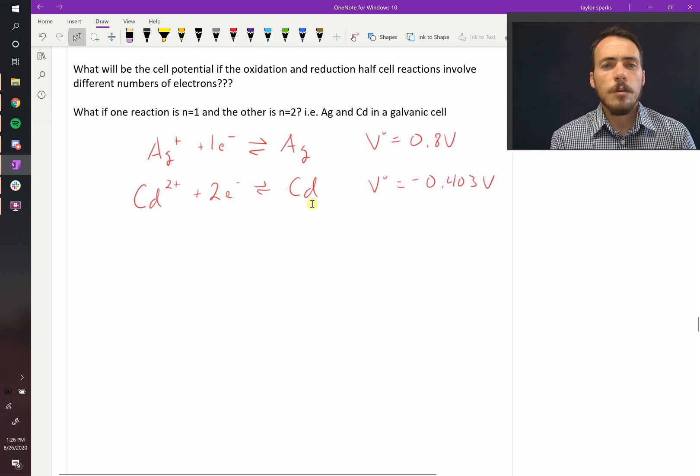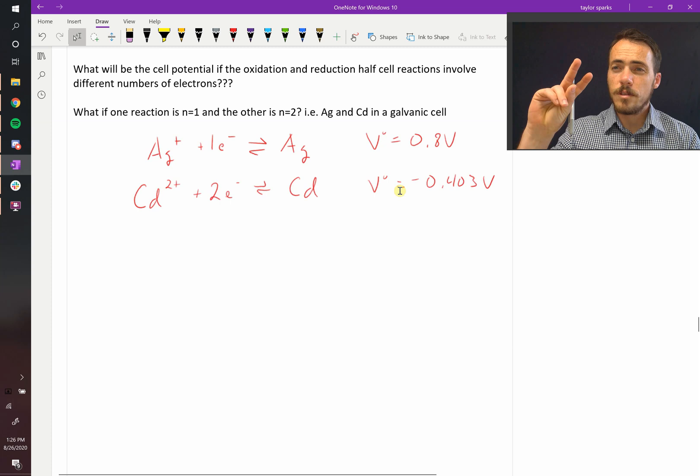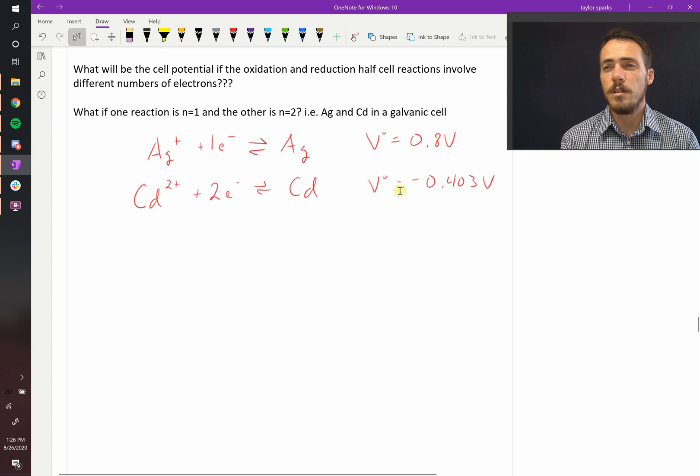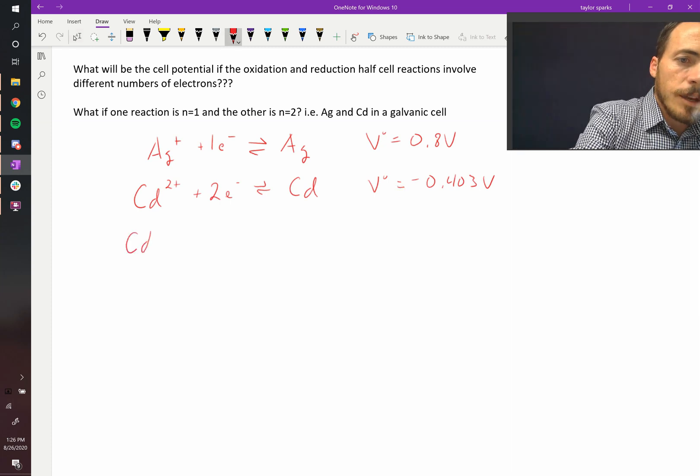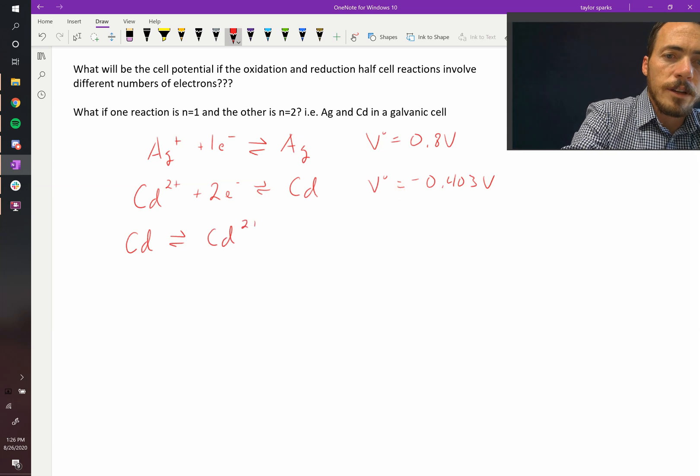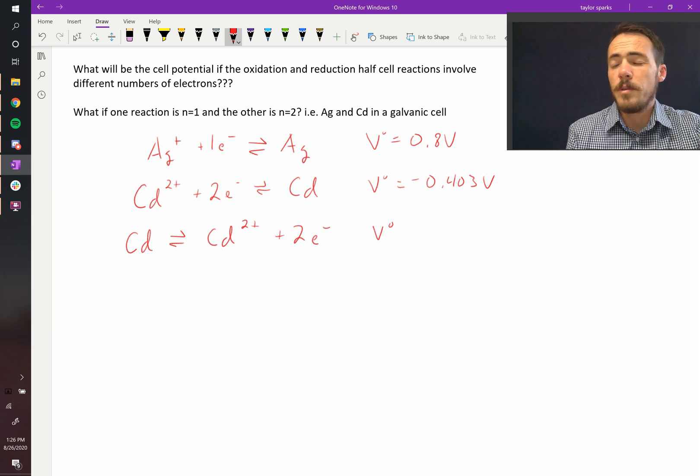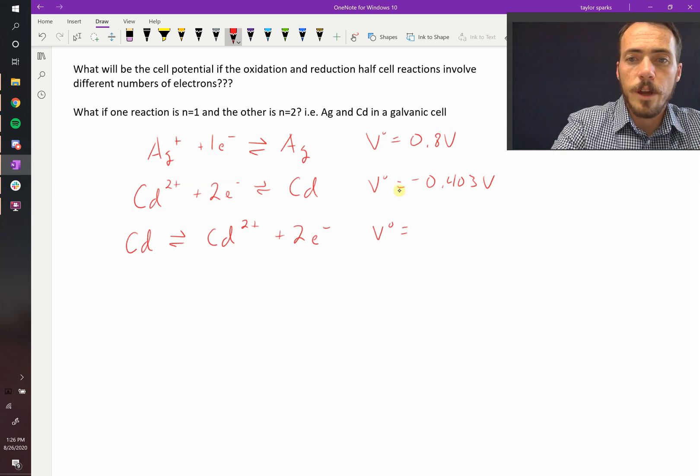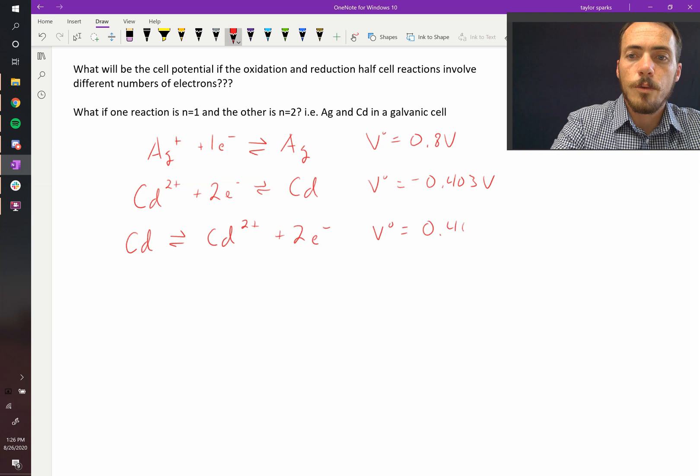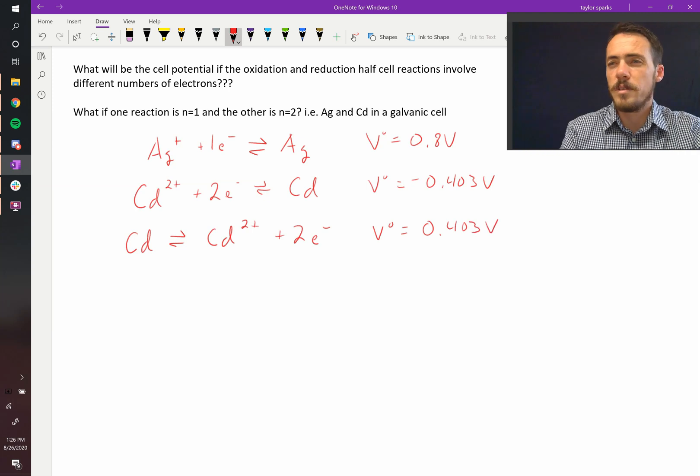Now, since cadmium is more negative, we know that it's the one that's going to get reversed and become the oxidized one. So let's go ahead and write that. Cadmium metal will now be oxidized to form Cd2+ ions and two electrons. Therefore, now it's going to become the standard oxidation potential, since it's written as an oxidation reaction, is positive 0.403 volts. We just flip the sign on that.